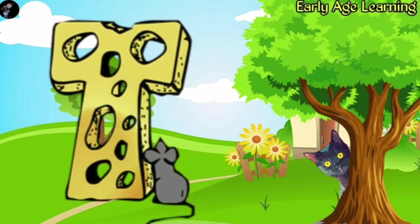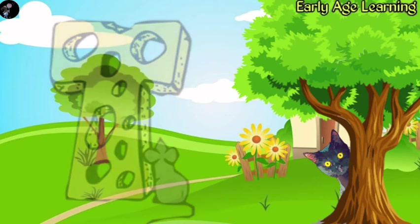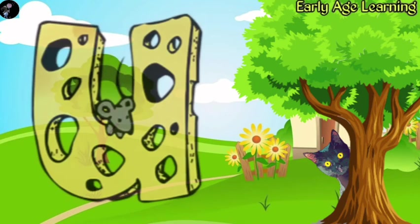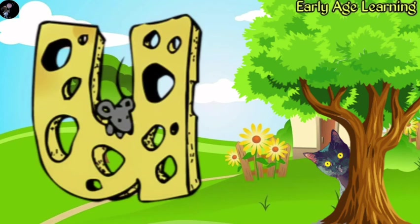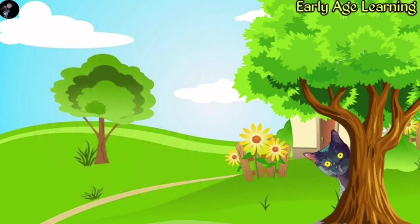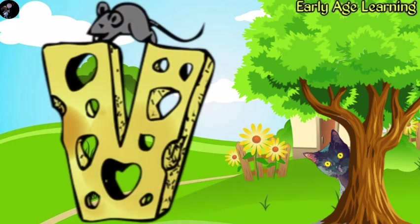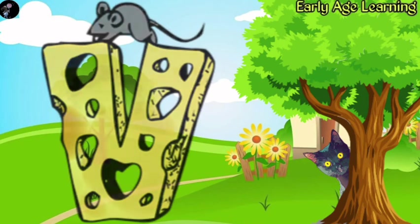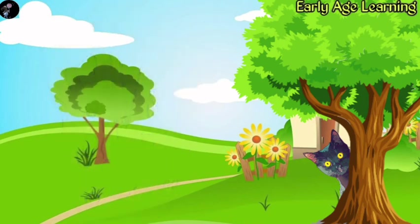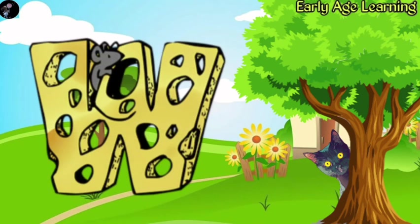T, T for Tree. U, U for Umbrella. V, V for Van. W, W for Watch.